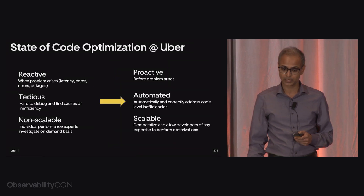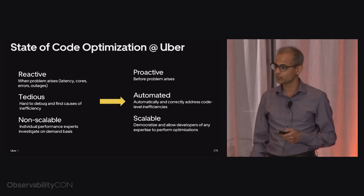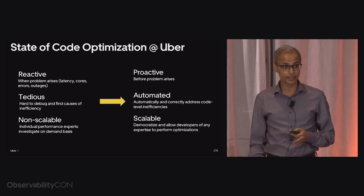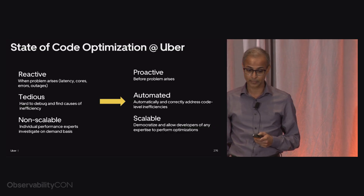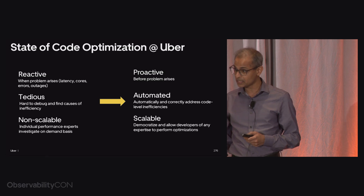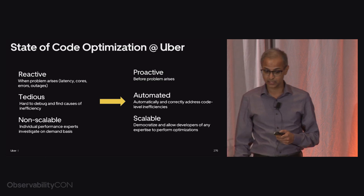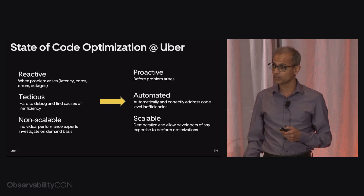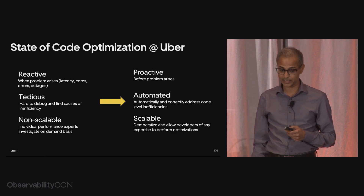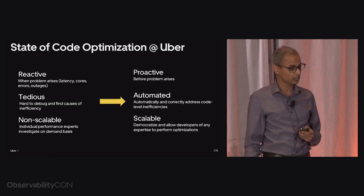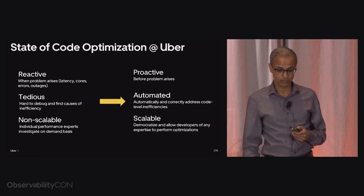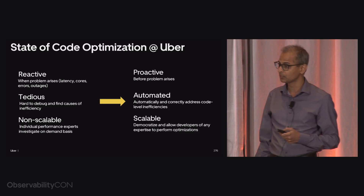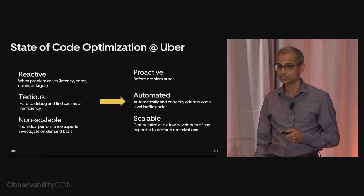We want to change it. We want to make it proactive — identify problems before they happen. We want to make it automated so that it automatically and correctly addresses code-level inefficiencies. And we want it to be scalable so that we can democratize and allow developers of any level of expertise to perform code optimizations.